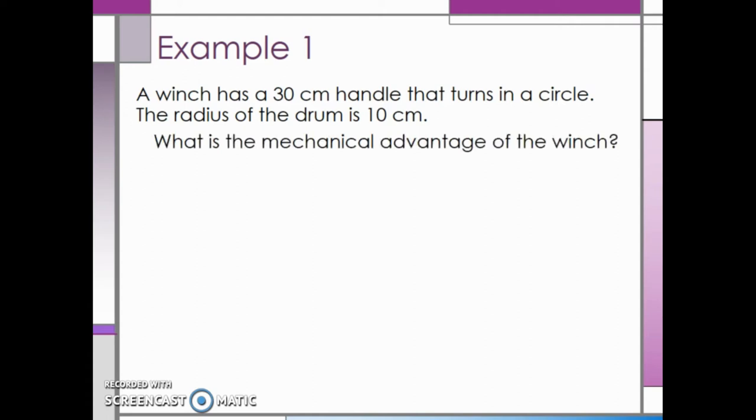In order to find the mechanical advantage, we have to take the effort radius and divide by the load radius. Since we are dividing a radius by a radius, it doesn't matter what we use for units, as long as both the effort radius and the load radius have the same units. Therefore, we can take 30 centimeters and divide that by 10 centimeters to get a mechanical advantage of 3.